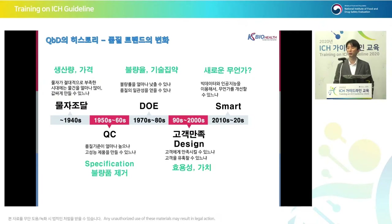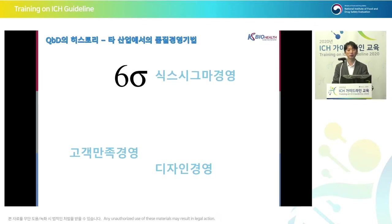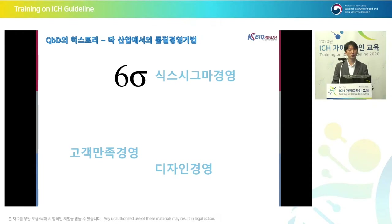Recently, big data and smart technologies are pushing change — but I think it's really about improvement of the manufacturing process. Smart technology will provide solutions for all pending challenges. New quality management methodologies have been introduced. Samsung Electronics and Hyundai Kia Motors have introduced Six Sigma, customer satisfaction management, and design management, and have become global companies.